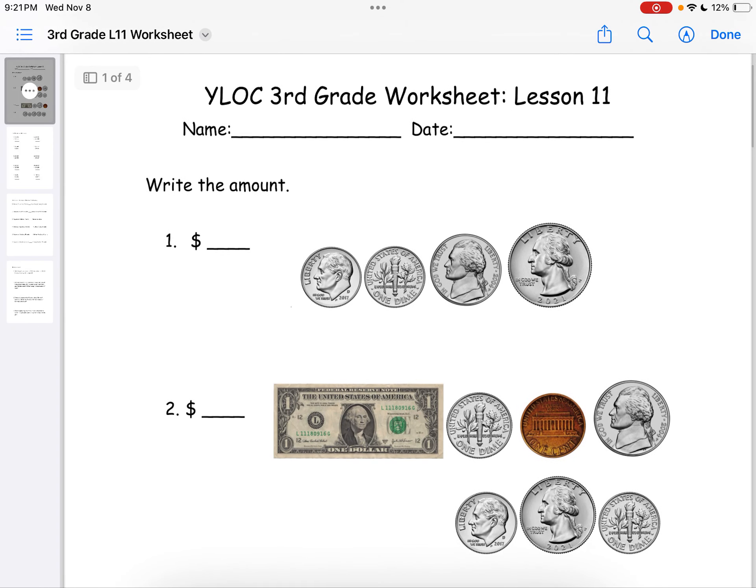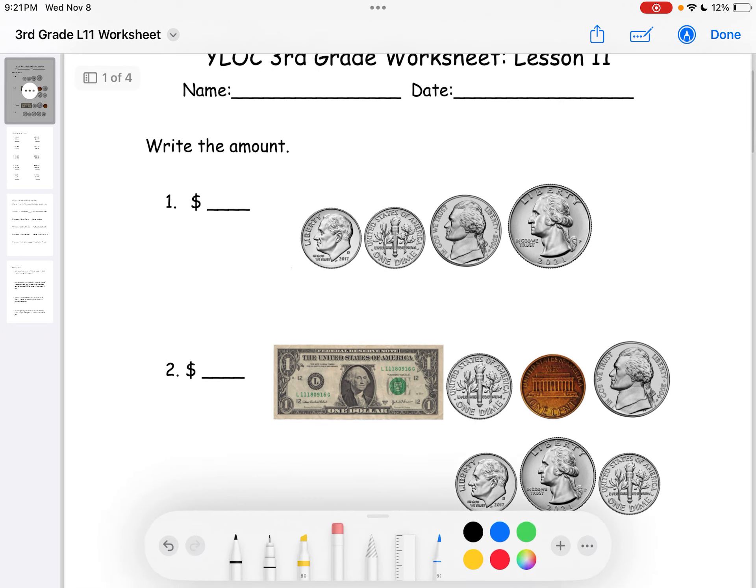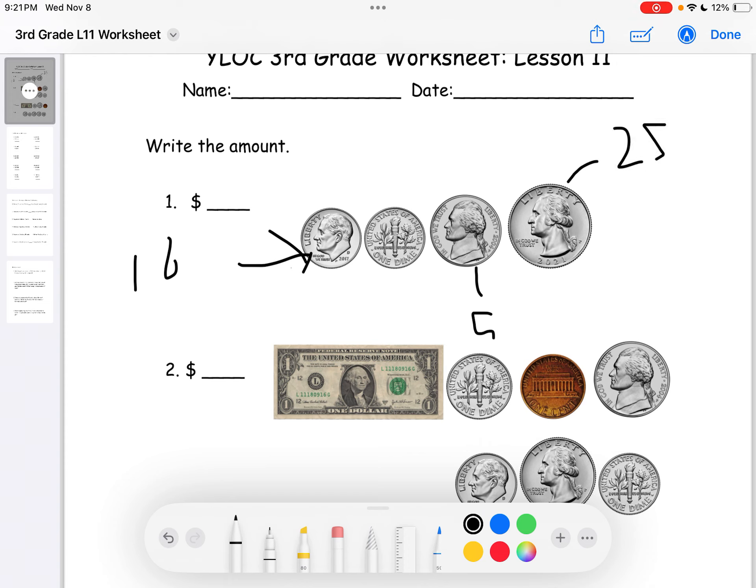Hello guys, welcome to YLOC 3rd grade worksheet lesson 11. The first part is writing the amount. We know that this is a dime right here, which is 10 cents. And that this is a nickel, which is 5 cents. And this is a quarter, which is 25 cents.